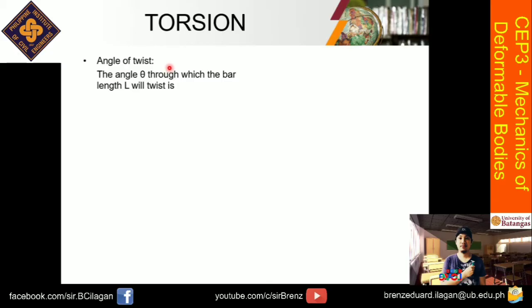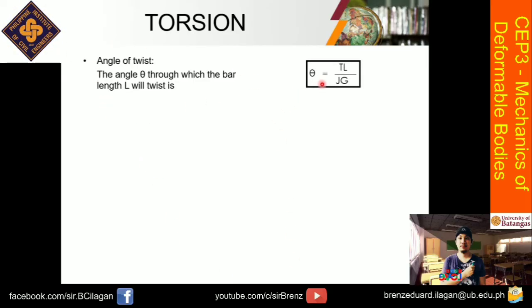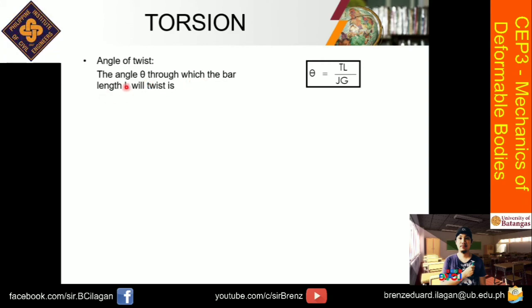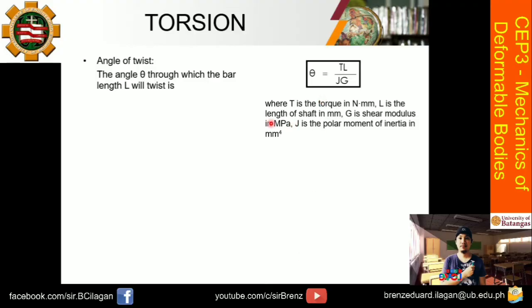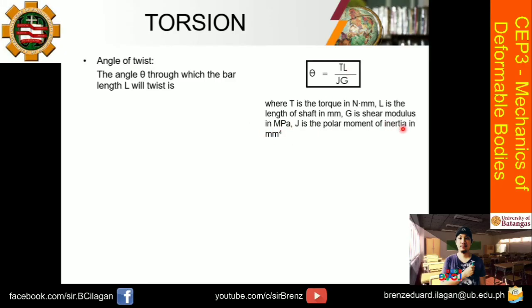Next, we have the angle of twist, denoted by theta. The angle of twist represents the actual deformation when torsion is applied — it is how much the bar twists. The formula is: theta equals T times L over J times G, where T is the torque, L is the length of the shaft, G is the shear modulus of rigidity (discussed in a previous module), and J is the polar moment of inertia in mm to the 4th power.